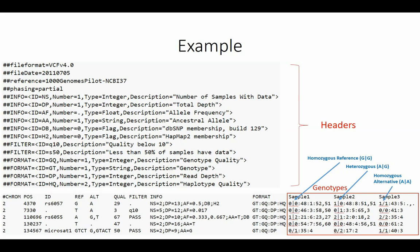You'll also notice that some variants have not only zero and one, but also two. That happens when we get variants that have multiple alternative alleles — this varies between different implementations, as some callers don't allow more than two alternatives while some do. For example, you can have a variant that actually has three different options: the reference A, or it could be G or T. Then you just use a counting system — one is the first alternative G, and two is the second alternative T.